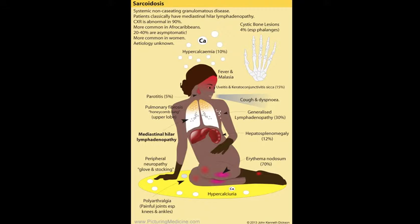Sarcoidosis is a systemic, non-caseating, granulomatous condition. Patients classically suffer with mediastinal hilar lymphadenopathy, and this can be detected on a chest x-ray in 90% of affected individuals. The condition is more common in Afro-Caribbeans. 20-40% of affected individuals are asymptomatic. It is more common in women, and the etiology of this condition is still not fully understood.